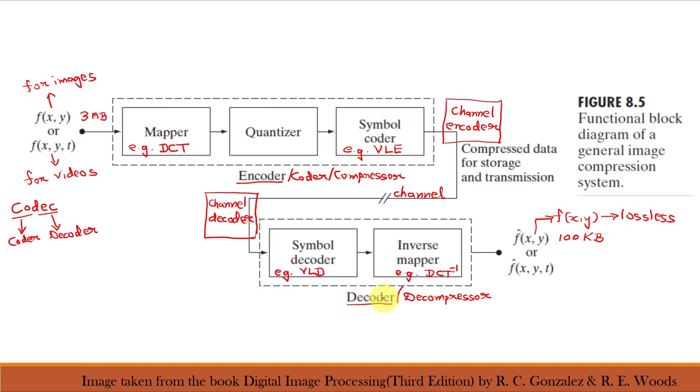The decoder shown here contains only two components, a symbol decoder and an inverse mapper. These blocks perform in reverse order the inverse operations of the encoder's symbol encoder and mapper blocks. Because quantization results in irreversible information loss, an inverse quantizer block is not included in the general source decoder model.